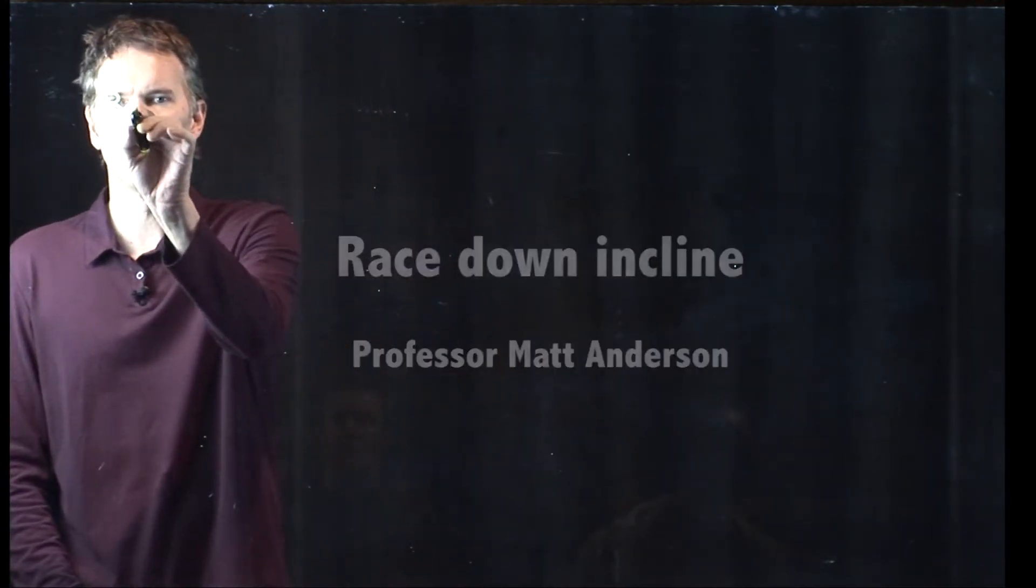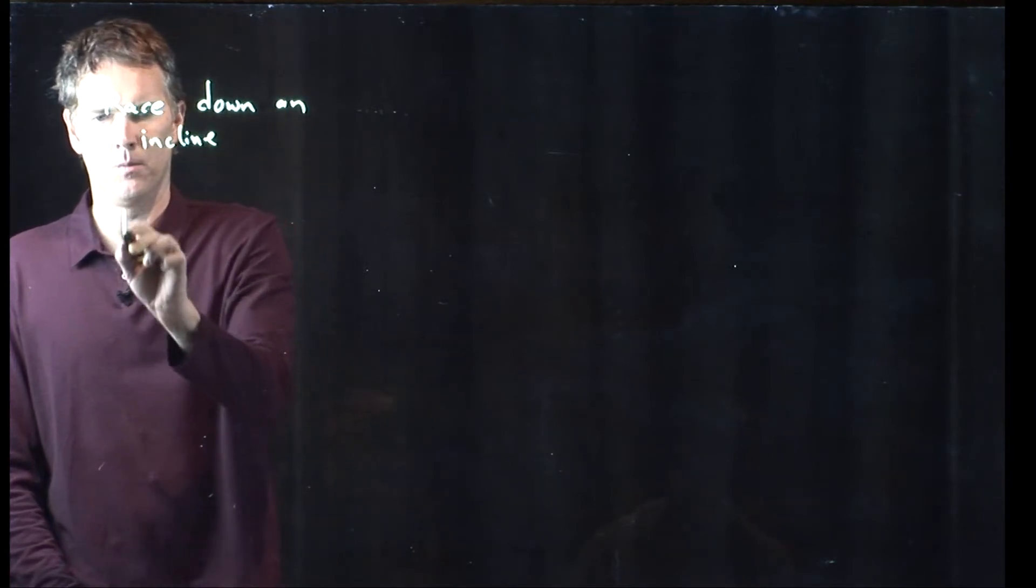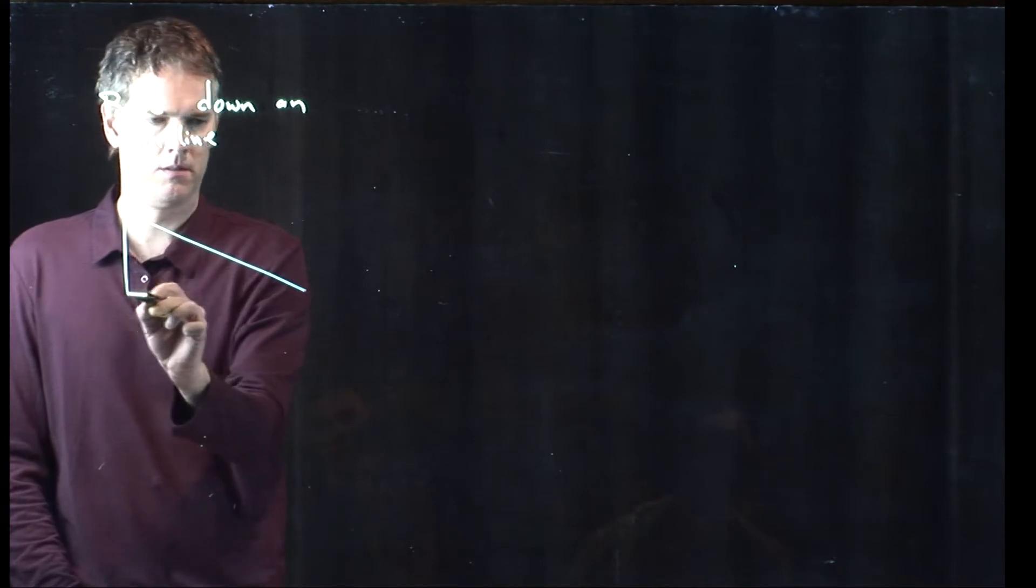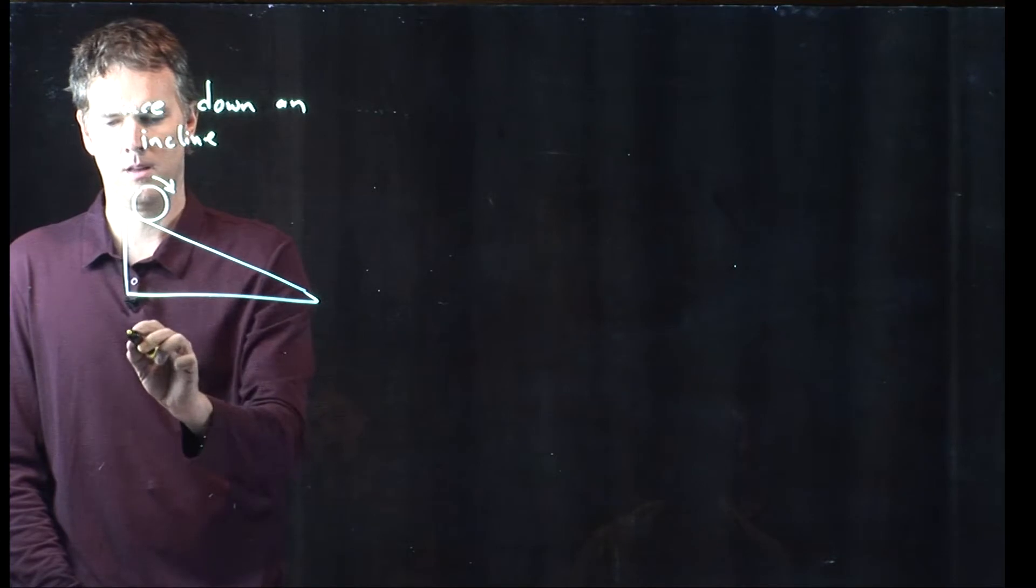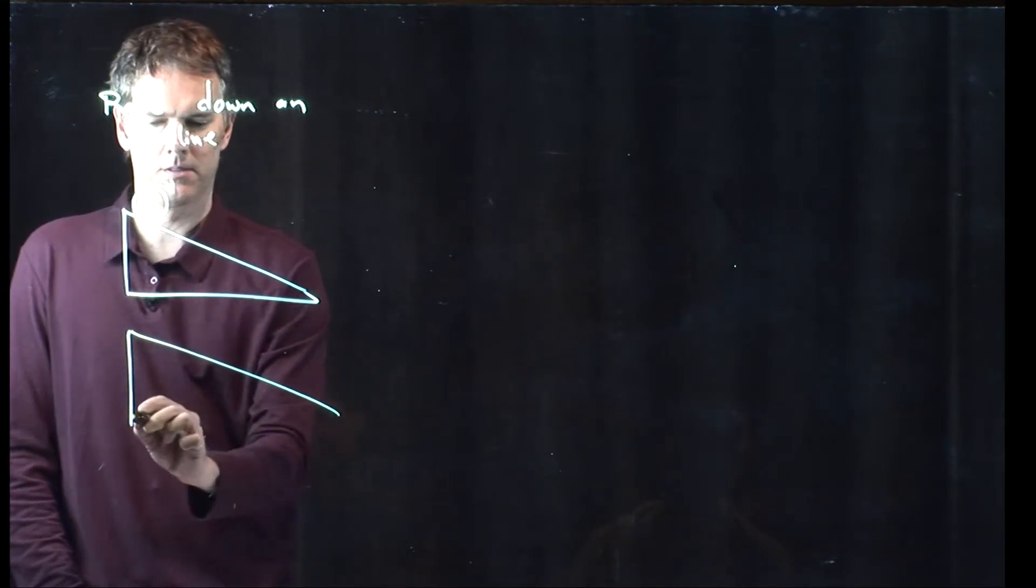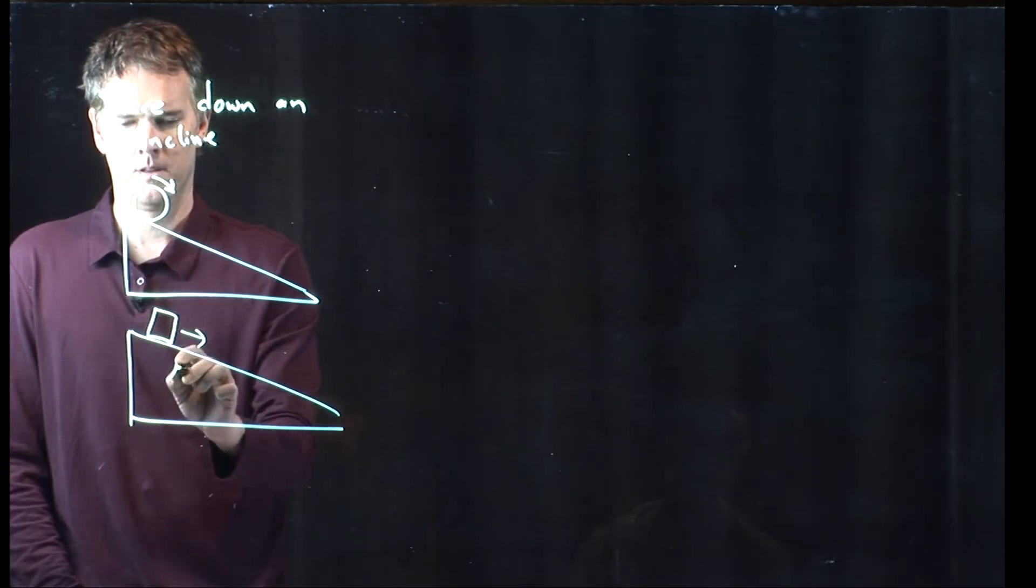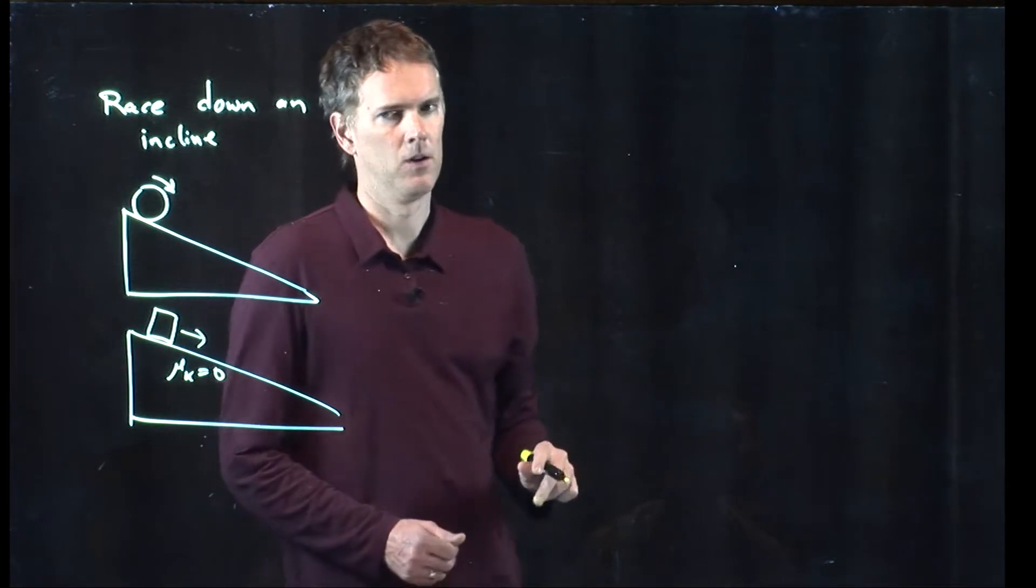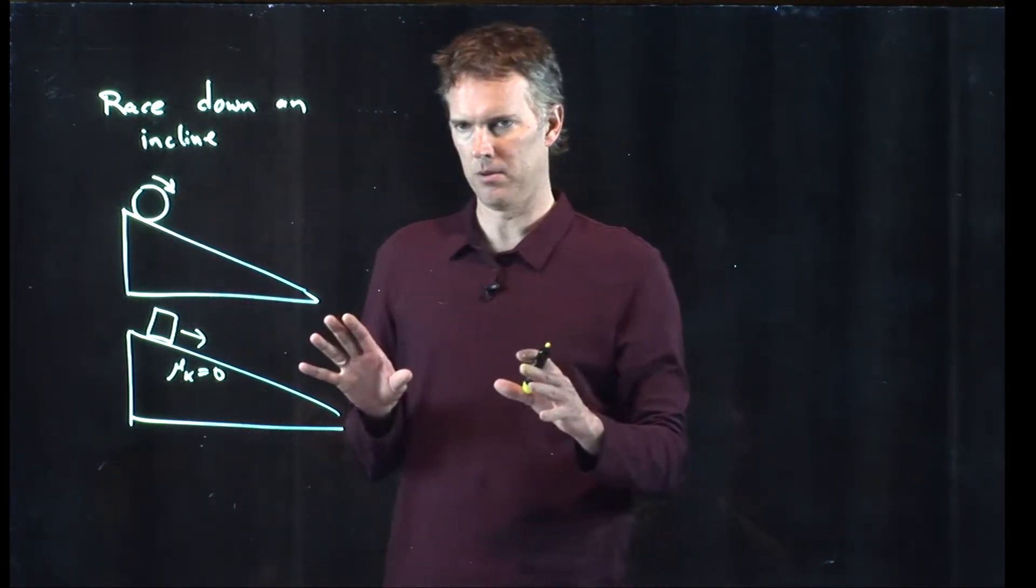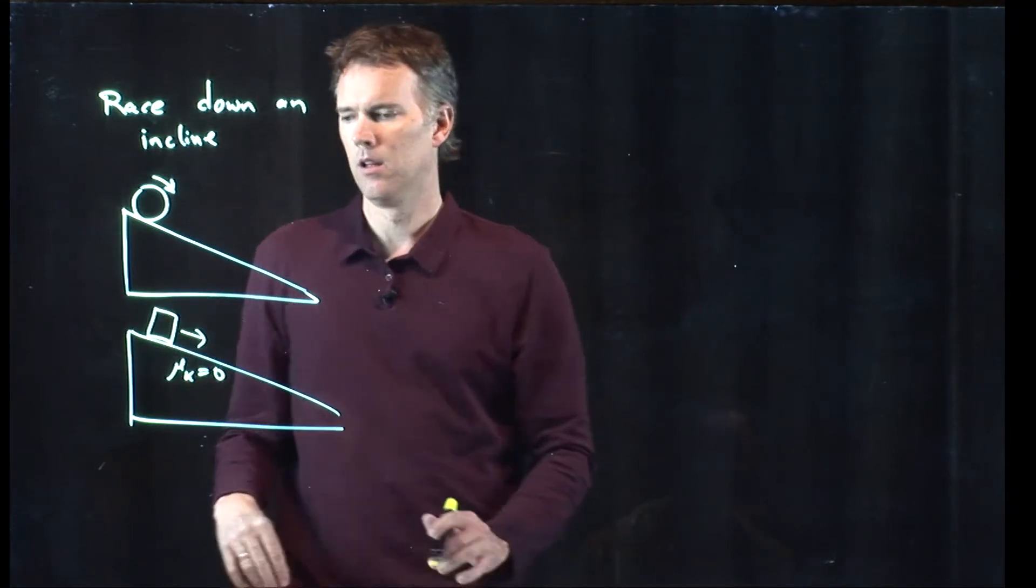Let's do a race down an incline between a wheel rolling and a box sliding without friction. Wheel rolling down the hill with no slip versus a box sliding down the hill with no friction.